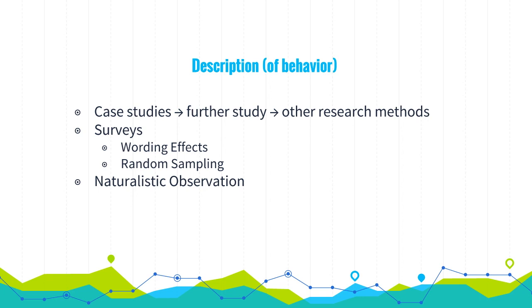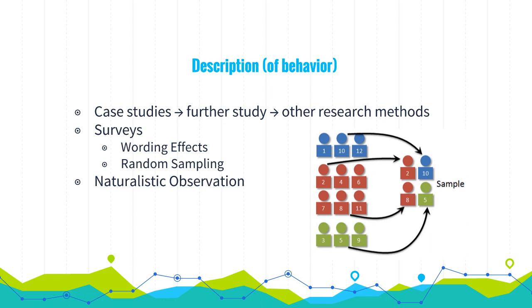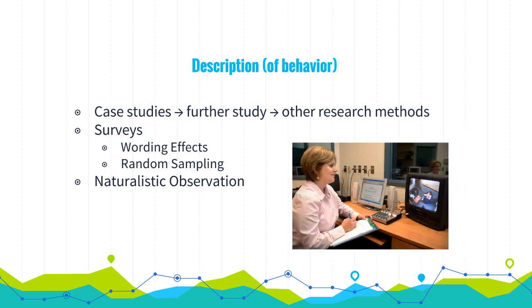Lastly, naturalistic observation is the third way of describing things. It's basically observing behavior in natural situations without manipulating those situations — it offers snapshots of everyday life. We have a picture of random sampling where people are randomly chosen, and a picture of a woman observing a boy doing homework — a snapshot of everyday life, that's naturalistic observation.